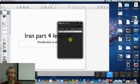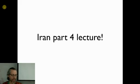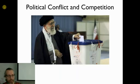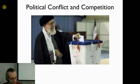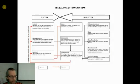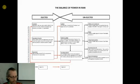Welcome to the Benson podcast. Today we're going to talk about Iran - this is Part 4. We're going to talk about political conflict and competition. Here you see the supreme leader voting - even the supreme leader does in fact vote. We're going to start by looking at the electoral system. Remember that Iran is about this mix of elements of democracy and non-democratic positions.